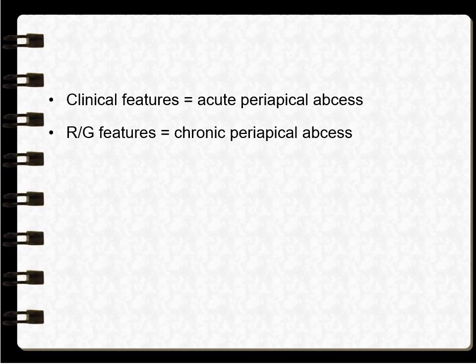Clinical features resemble acute periapical abscess — the patient will have sharp pain and swelling. Radiographic features resemble chronic periapical abscess, showing radiolucency and widening of the periodontal ligament.